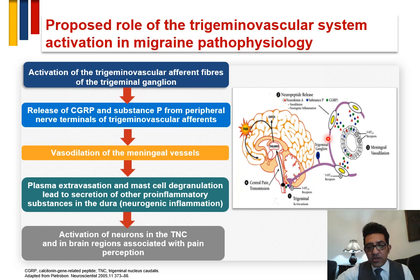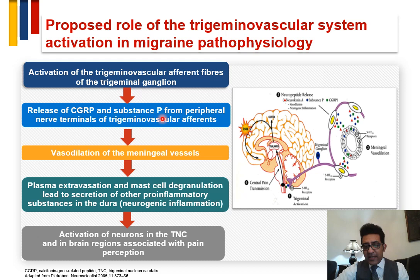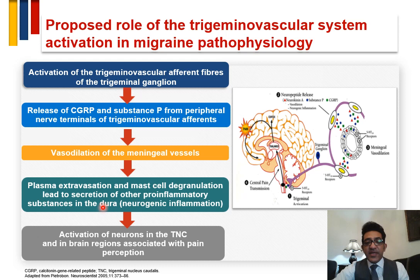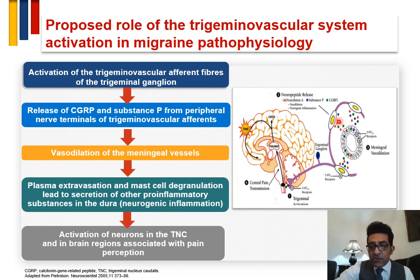This schematic represents the algorithm of activation of the trigeminovascular system. Activation of the trigeminal ganglion leads to release of substance P and CGRP from the peripheral nerve terminal around blood vessels, causing vasodilatation with extravasation and mast cell degranulation of pro-inflammatory substances, activating nociceptive neurons. These neurons go back to the trigeminal ganglion, then to the spinal trigeminal nucleus, then to the thalamus, and then to the cortex.